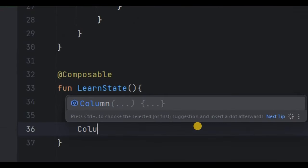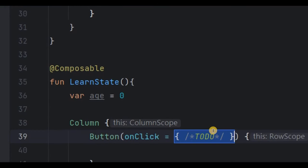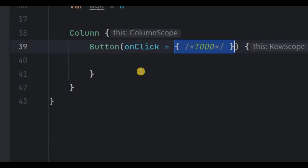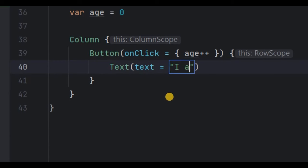So instead, first we will create a layout and inside that layout our UI component. So for the layout I'll use column layout. Then inside it our button. So when you click on it, it should increment by one. So to do that, I will write age plus plus here in onClick, and then on the button the text will say I am age variable years old.